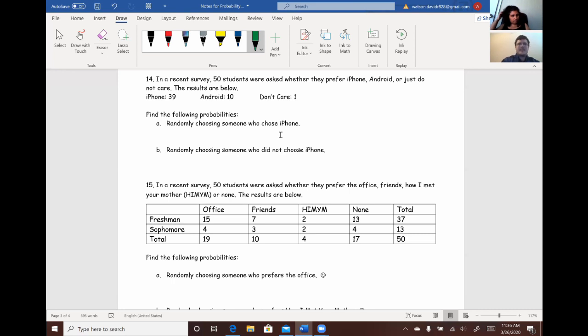All right. So, again, it's going to be the number of people who chose iPhone divided by the total. So, we're still working with 50 students. So, we're just going to take the number of people who preferred iPhone, 39, and divide that by the 50 students. And when we do that and convert it to a decimal, it'd be 0.78. By the way, I prefer iPhone, so I'm in that category.